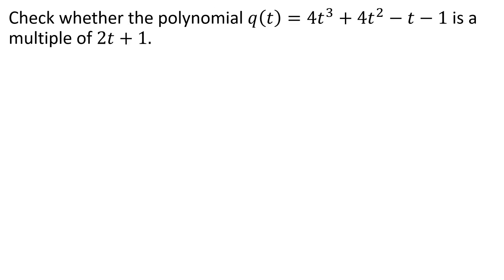Check whether the polynomial Q of t equal to 4t cubed plus 4t squared minus t minus 1 is a multiple of 2t plus 1. If the remainder is 0, then it is a multiple.